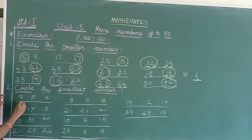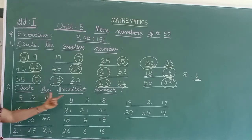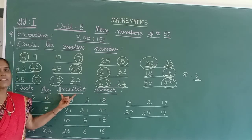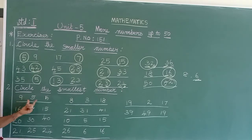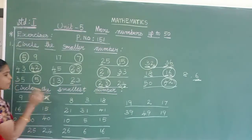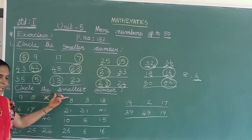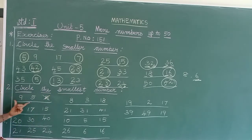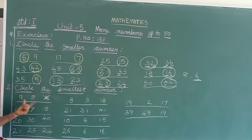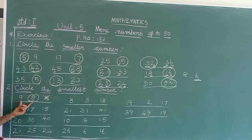Come to the first sum: 9, 5, 16. They ask you to circle the smallest number. Since the 2-digit number is always bigger than the 1-digit number, disqualify 16. Come to 9 and 5 — which is smaller? 5 is smaller than 9. So circle 5.